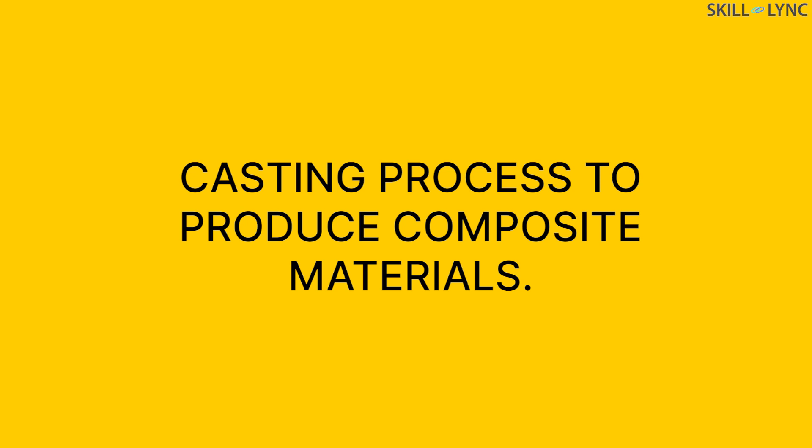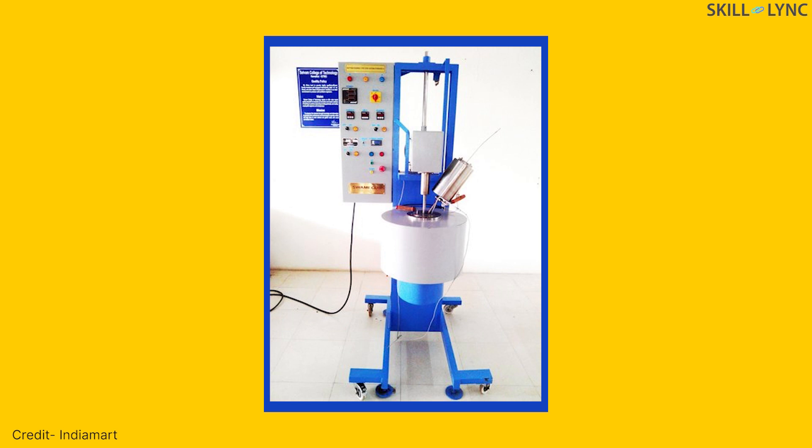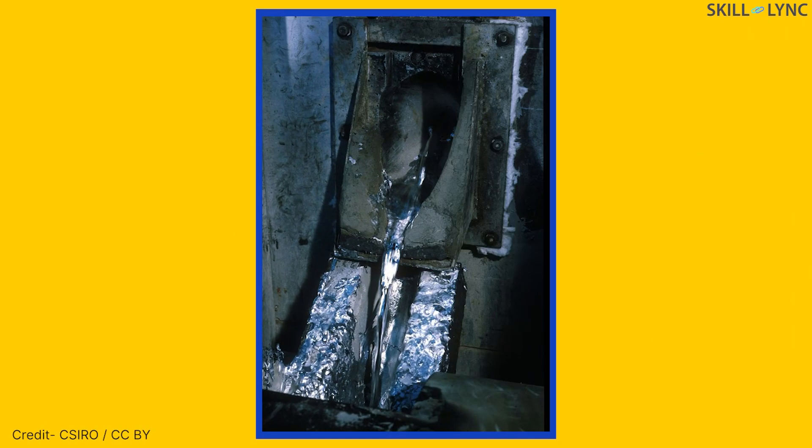This process is called stir casting. In stir casting, mechanical stirring is used to mix a molten matrix metal with a dispersed phase such as ceramic particles and short fibers. This forms a liquid ceramic material which is then cast by conventional casting methods.